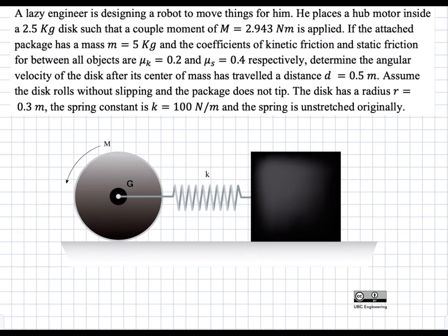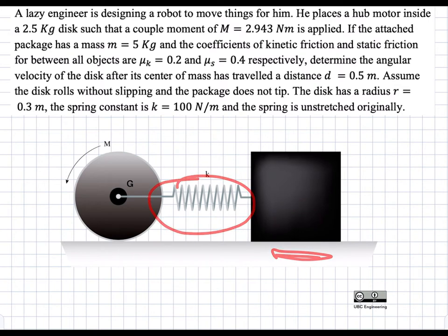In this problem we have a wheel where we apply a moment, and this wheel starts spinning and dragging a block along a distance. The block and the wheel are connected by a spring. We need to find the angular velocity of the disk after the center of mass G has moved 0.5 meters to the left, given all the properties of the system. The block has friction with the bottom surface, a spring connects the two systems, and the wheel rotates without slipping at the bottom.